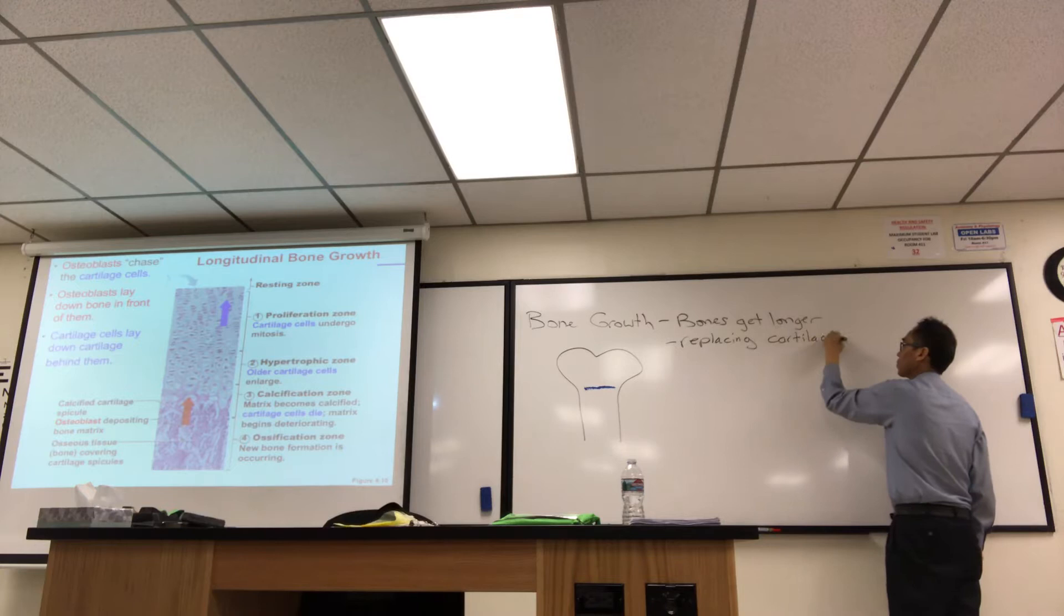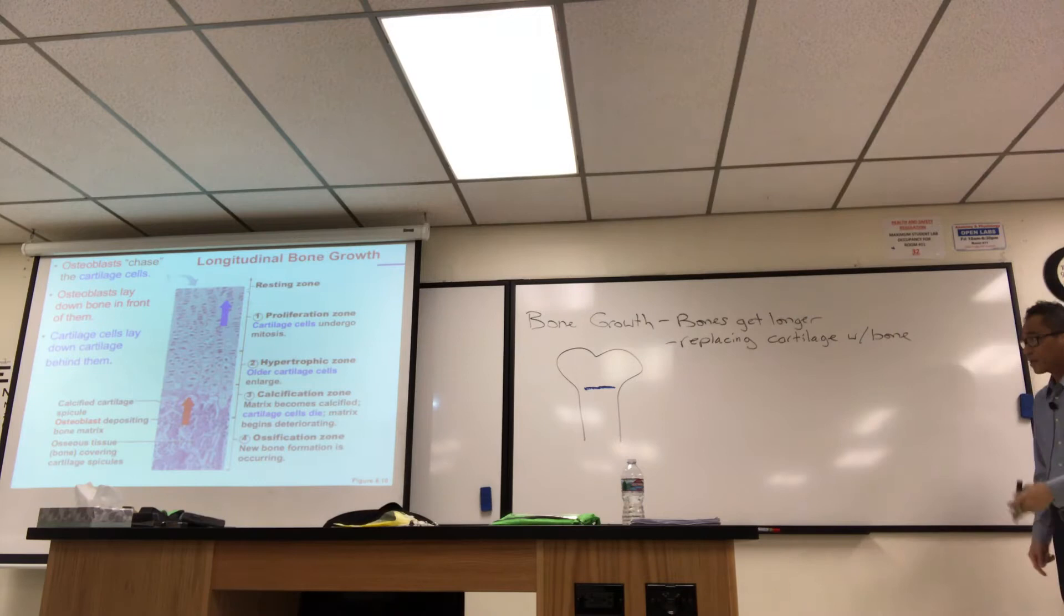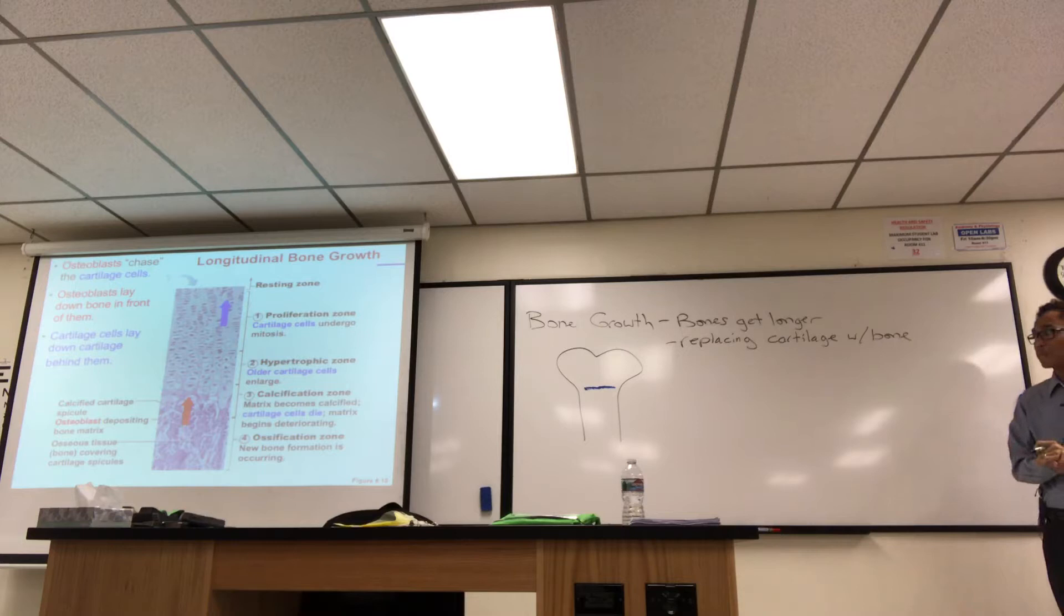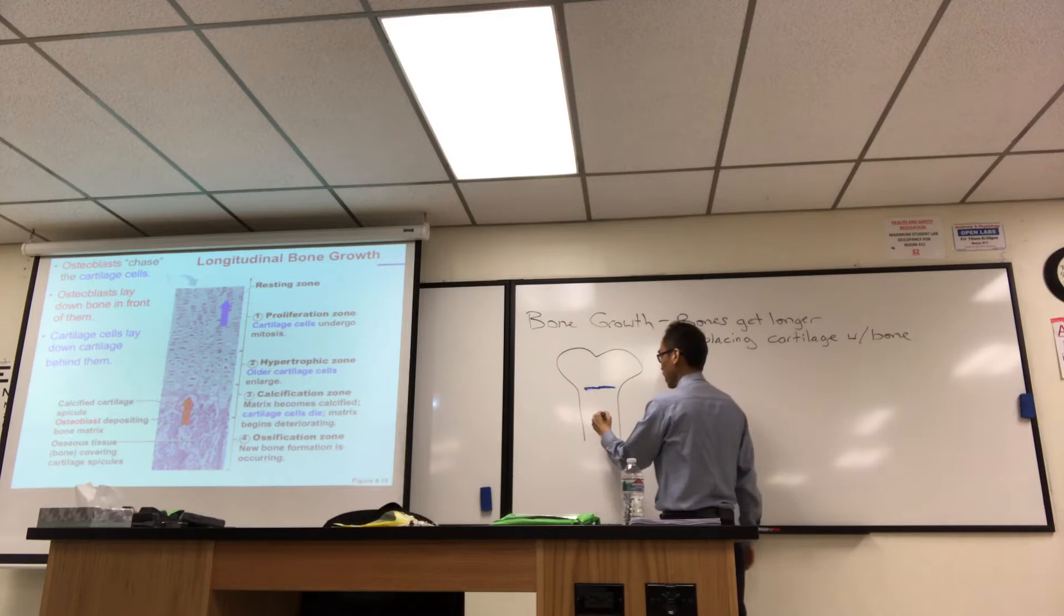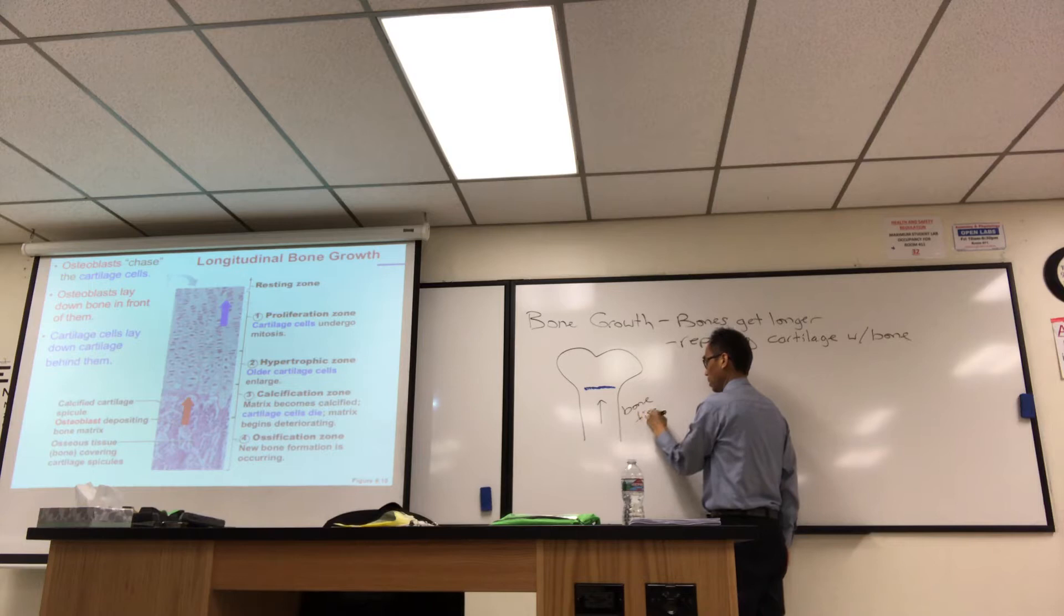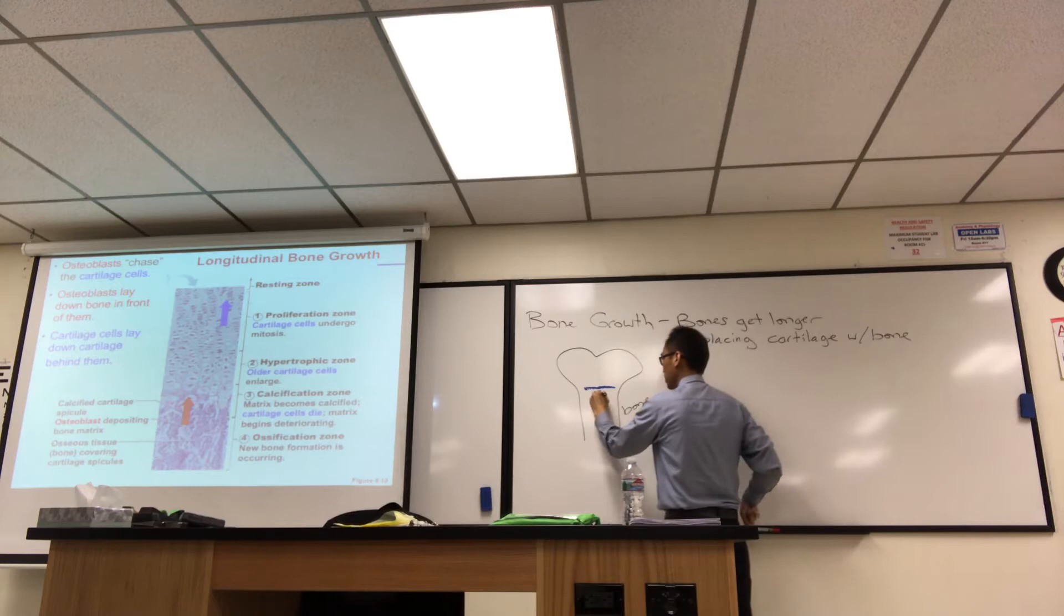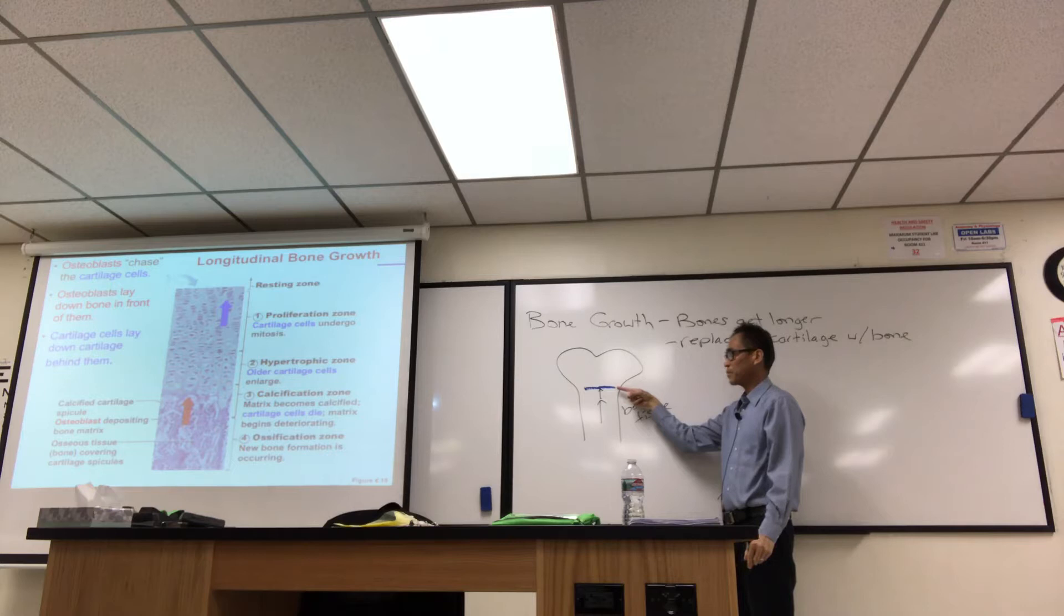Replacing cartilage with bone. We talked about that a lot last time when I talked about ossification. That's all ossification is, replacing cartilage with bone. So what happens is, it's like you have bone tissue at the bottom of the slide, right? This bone tissue down here. And the blue line is cartilage. And it's kind of chasing that cartilage. And when it gets to the edge, the bottom edge there, it's like the cartilage is dying at the bottom edge.